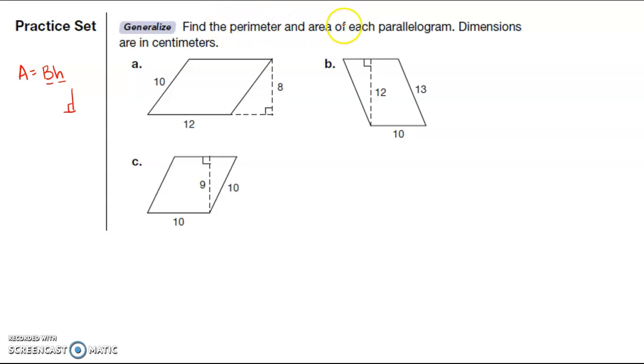This says find the perimeter and area of each parallelogram, dimensions are in centimeters. So if this is 10, I know this is 10, and if this is 12, I know this is 12. So my perimeter is going to be 12 plus 10 plus 12 plus 10, which is 44. That's 24, 34, 44.